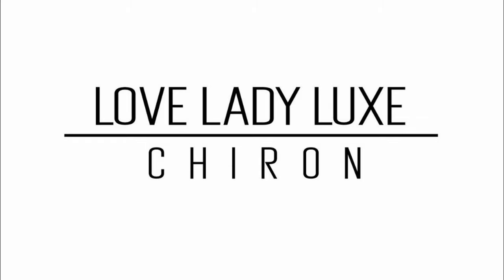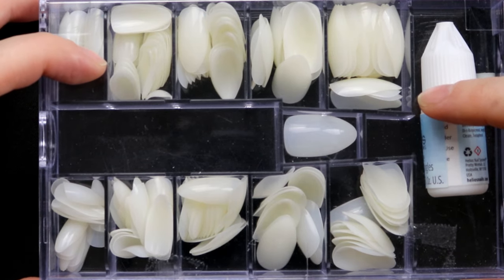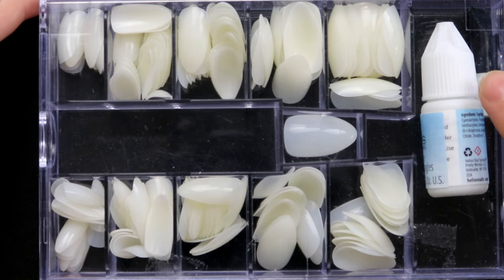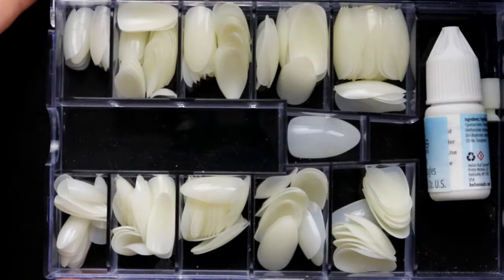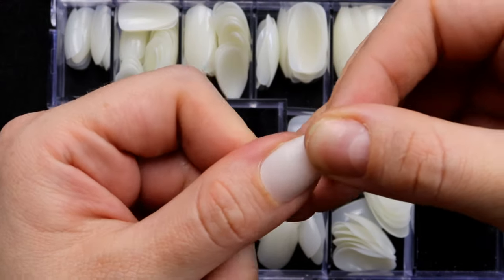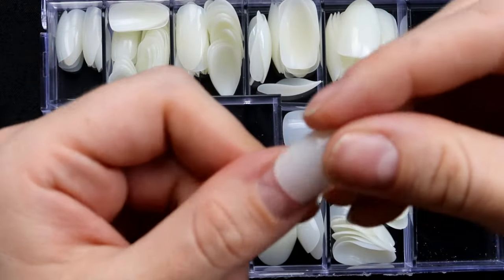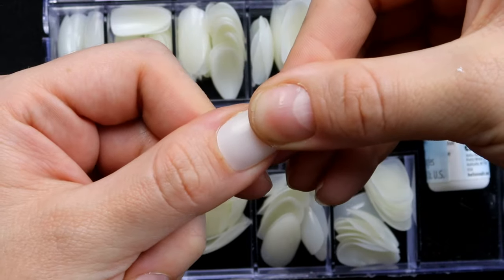Hi guys, it's Sharon from Love Lady Luxe. Welcome back to my channel. Today we're going to do a Halloween nail tutorial. I've got my glue, my cuticle pushers, and nails in various sizes - all almond shapes. I'm going in and selecting the size that I need.